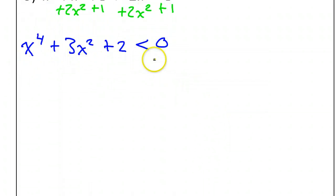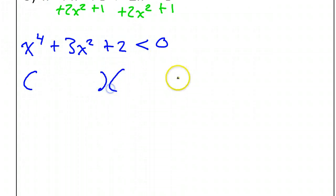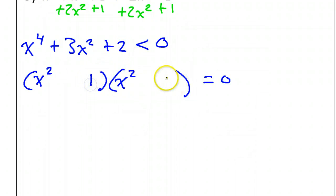We need to find the zeros of this function and see what we're dealing with. Let's try factoring this — I'm noticing that it's a trinomial, so there's a chance it can be factored. When I look at x to the fourth power, I know that can factor as x squared times x squared. And when I look at 2, I know that can be 1 times 2.